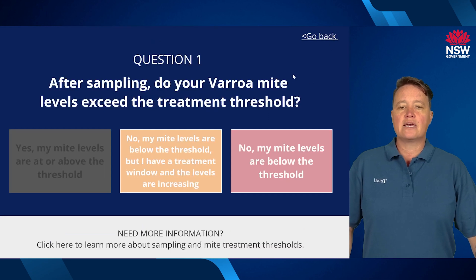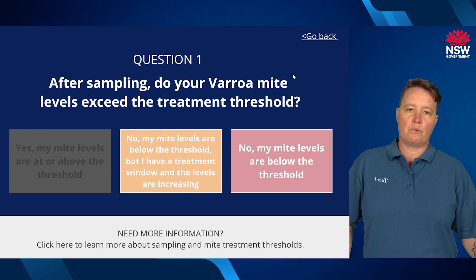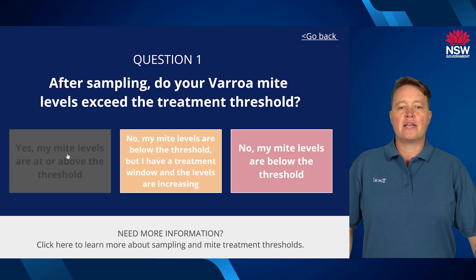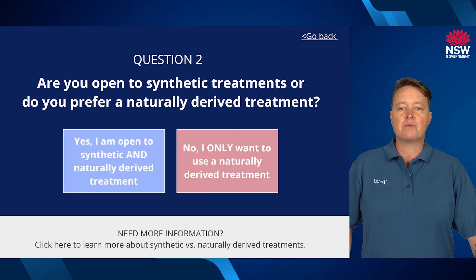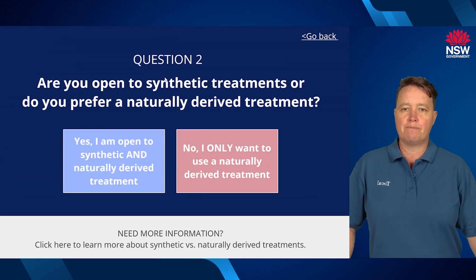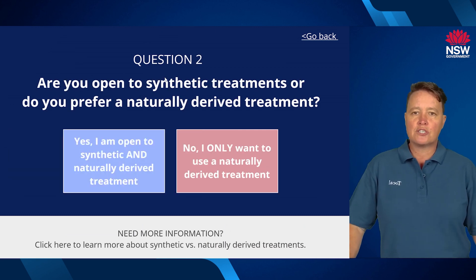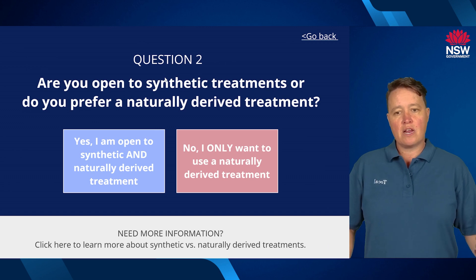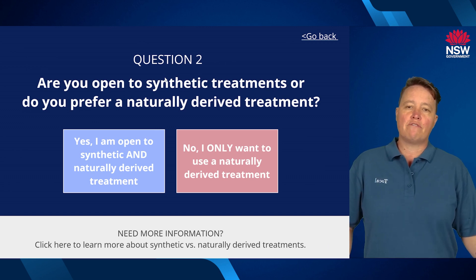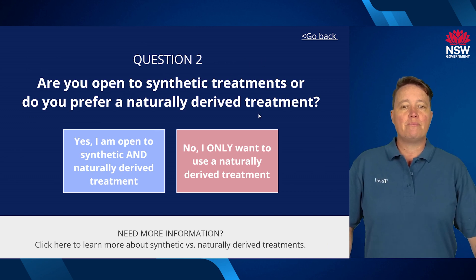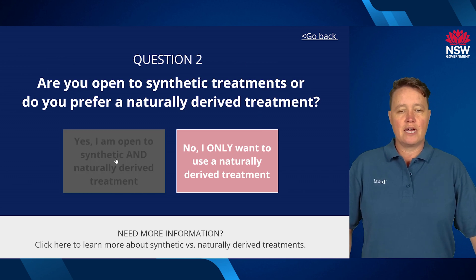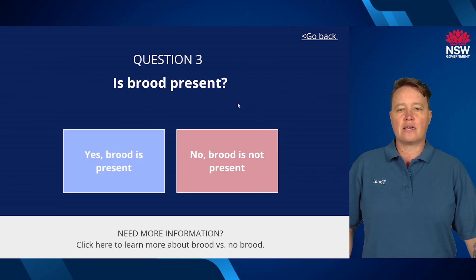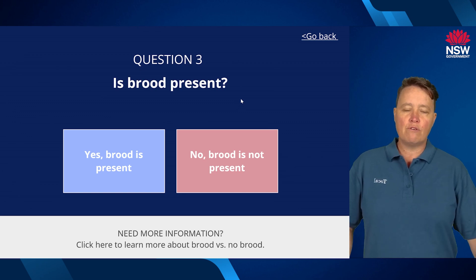Closing that takes us back to the first question. Now if we decide that our mite levels are actually at or above threshold, we click on that and it takes you to another question. This asks whether you'd prefer to use synthetic or only naturally derived treatments, or if you're open to both. If you're open to both, you can select yes, I'm open to natural and synthetic. It will then take you through a series of questions about the hive itself.